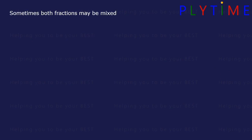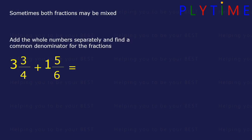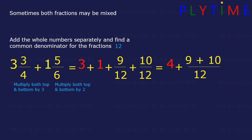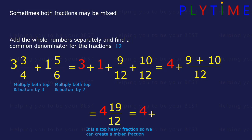Sometimes both fractions might be mixed. For 3 and 3 quarters plus 1 and 5 sixths, we add the whole numbers separately and then find a common denominator for the fractions. We've got quarters and sixths, so a common denominator would be 12. We have 3 plus 1, then convert our fractions: multiply the top and the bottom by 3 to get 9 twelfths, and multiply the top and the bottom by 2 to get 10 twelfths. So we have 3 plus 1, which is 4, plus 9 plus 10 twelfths. 9 plus 10 equals 19 twelfths — this is a top-heavy or improper fraction, so we create a mixed fraction: it's the same as 4 plus 1 and 7 twelfths, which is 5 and 7 twelfths.